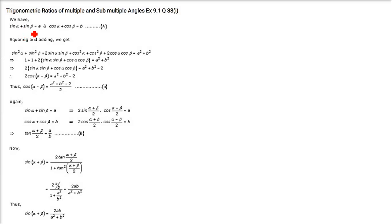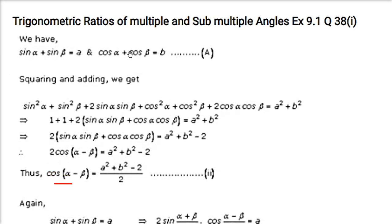Now we have sin α + sin β = a and cos α + cos β = b. We have to find cos(α − β) and sin(α + β). The trick is to square both equations and add left-hand sides together and right-hand sides together. Squaring gives sin²α + sin²β + 2 sin α sin β, and cos²α + cos²β + 2 cos α cos β, totaling a² + b².